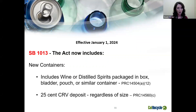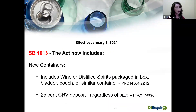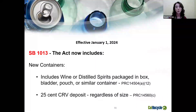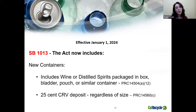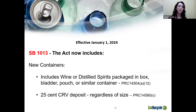As a consumer, when you go to the grocery store looking for orange juice, orange juice in a carton is still not covered under our program. Boxes are only included when they contain the new wine and spirit categories. For wine and distilled spirits box, bladder, and pouch, there is a new California redemption value deposit rate of $0.25. This is for all boxes, bladders, and pouches containing wine and distilled spirits, and it doesn't matter the size — if it's in one of these new materials, it will be a $0.25 CRV deposit.